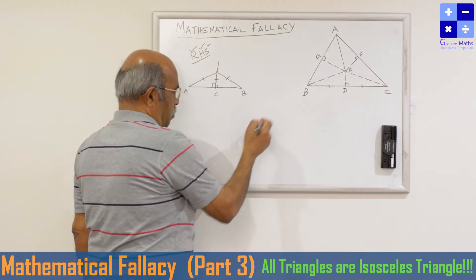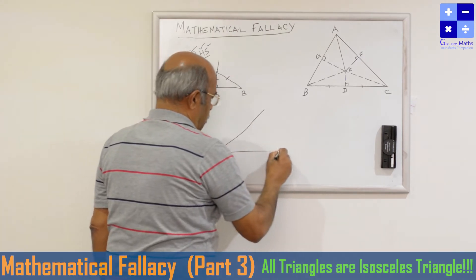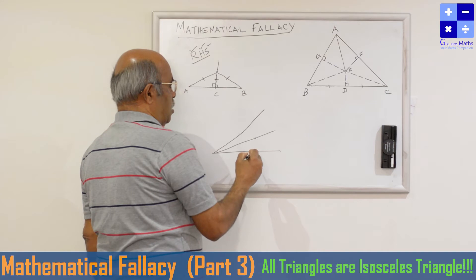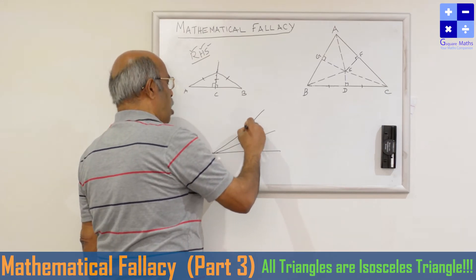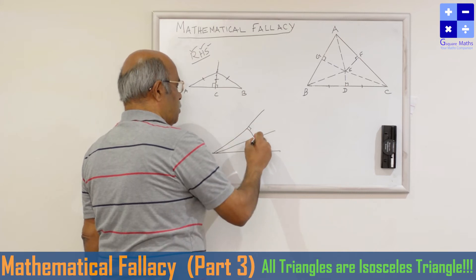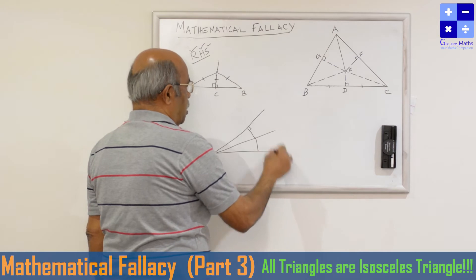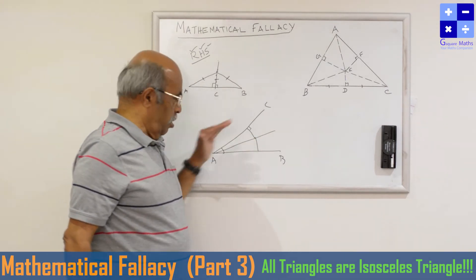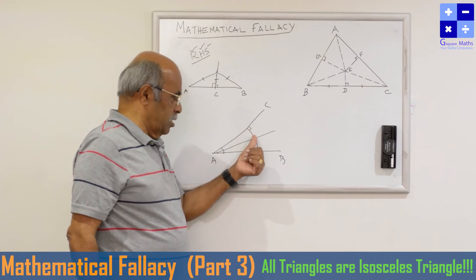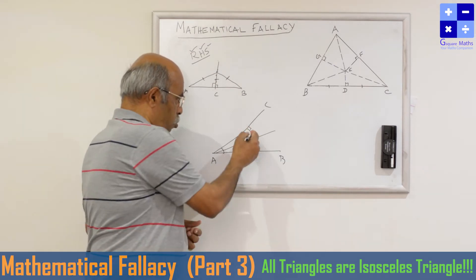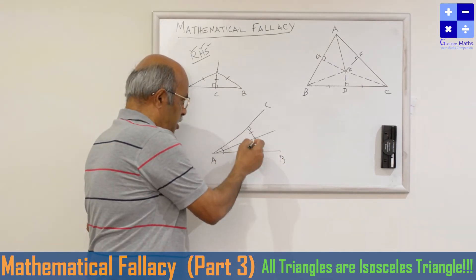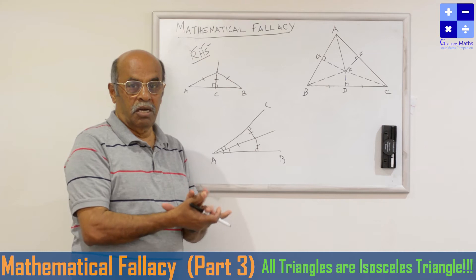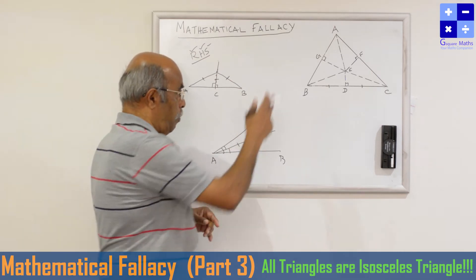Another property I am going to apply here: the angle bisector property. There is an angle bisector of angle A, with AB and AC as the arms of angle A. Take any point on the angle bisector. The legs — meaning the perpendiculars drawn from that point to the arms of the angle — will always be equal. The proof is simple: both angles are 90 degrees, the angle bisector makes equal angles, and the hypotenuse is common. By AAS, the two triangles are congruent, and hence the two perpendicular distances are equal. These two properties I am going to apply here.